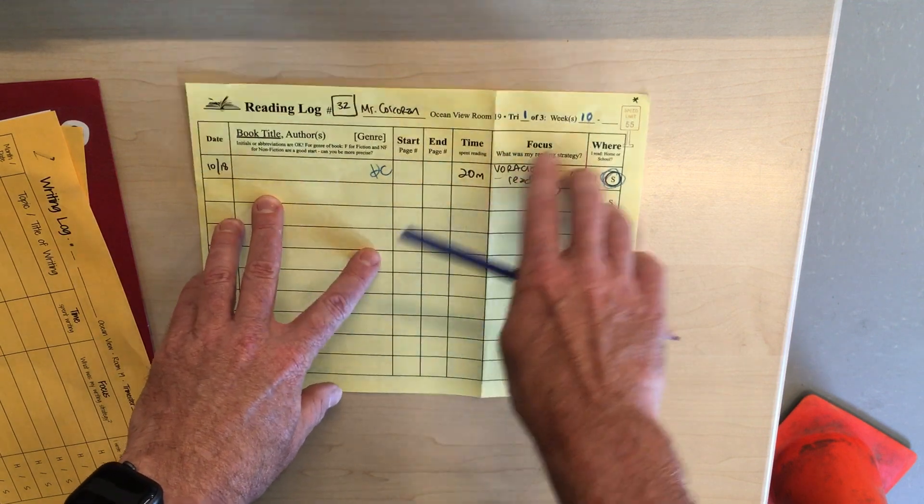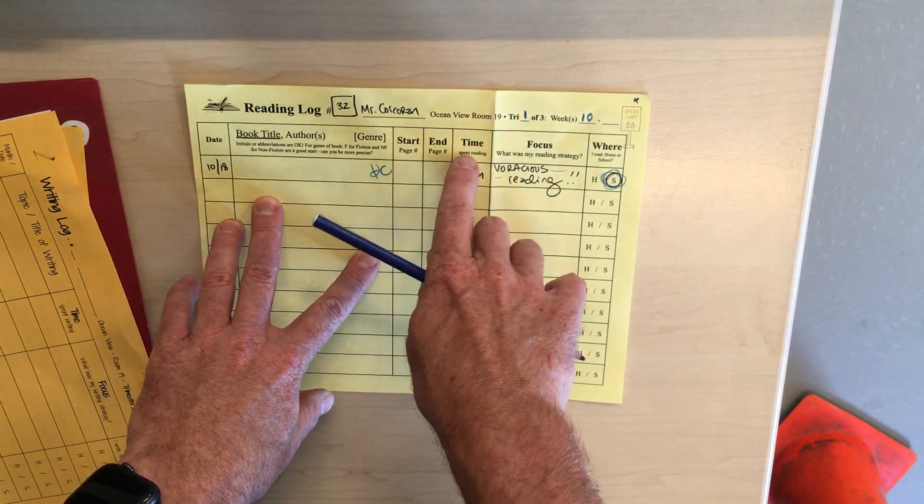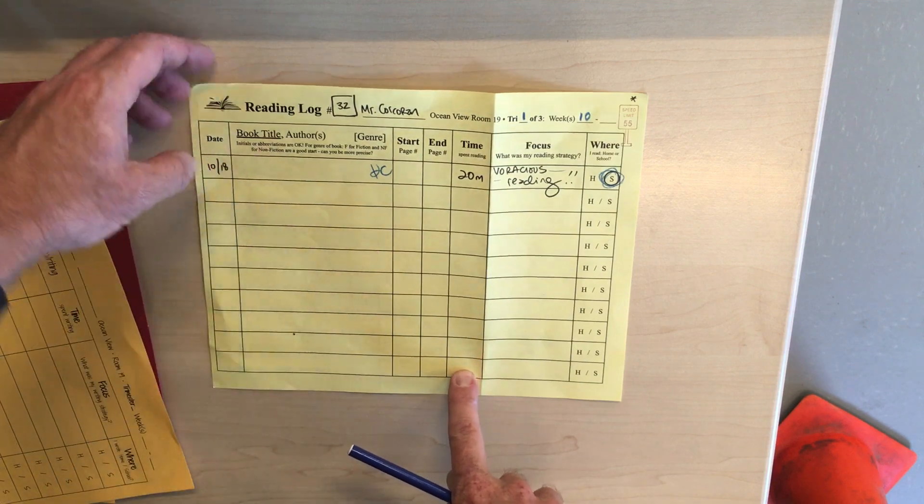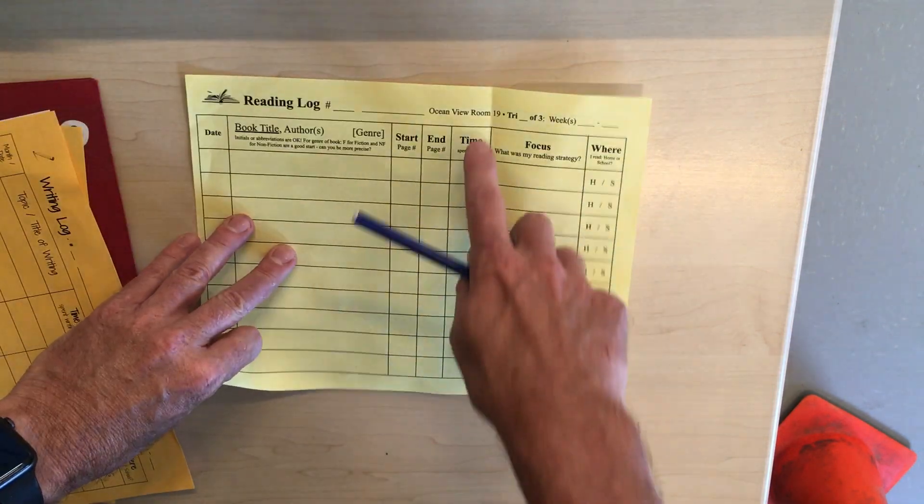So our reading goal for week 10: 200 minutes for the week. So that's here, flip it over here.